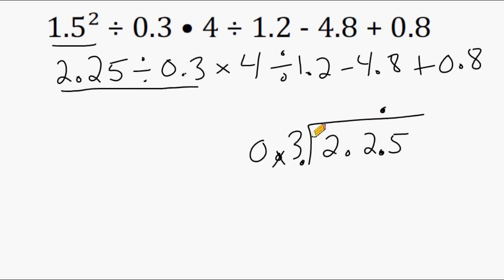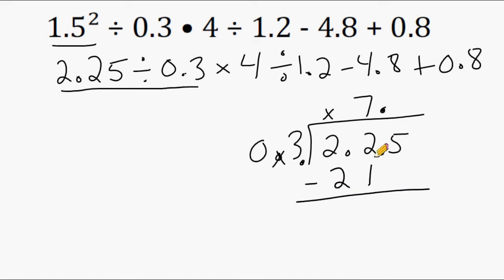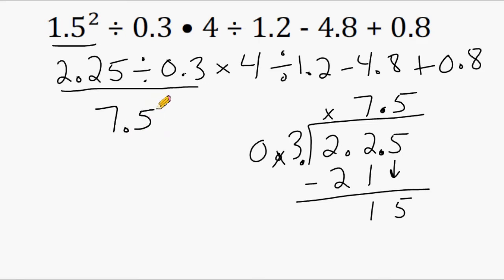So we're going to move this decimal one place value as well, and then move it directly above for the answer. Now because 3 does not fit into 2, we are not allowed to write anything on top of this digit. Next we see how many times 3 goes into 22, which is 7 times. 7 groups of 3 is 21. 22 minus 21 is 1. We bring down the 5, which is 15, and we divide 3 into 15, which fits in exactly 5 times. So 2.25 divided by 0.3 is equal to 7.5.